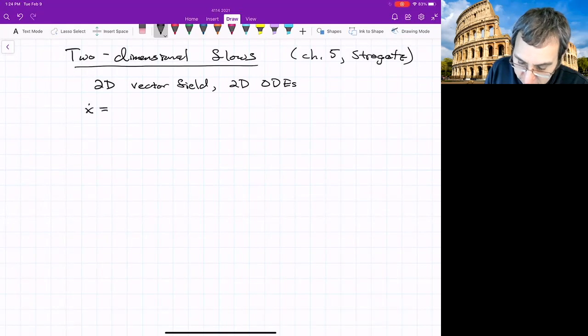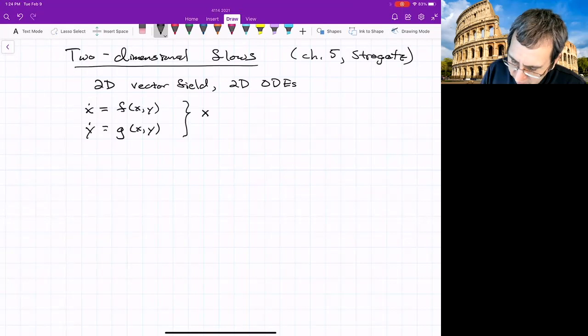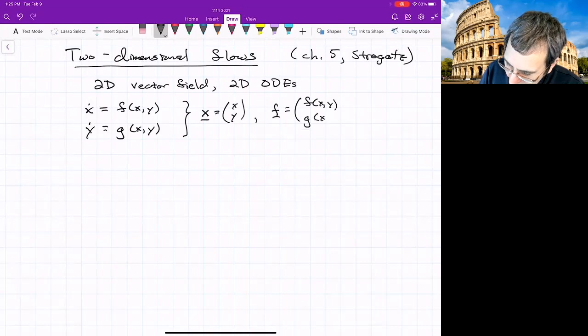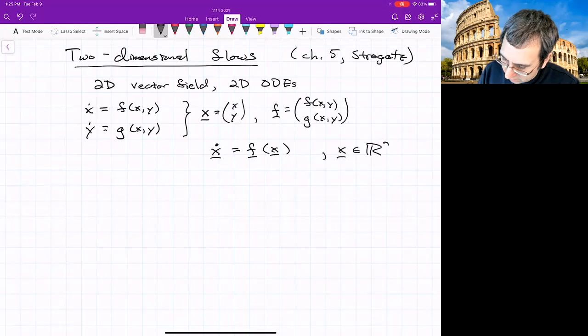We have an x variable and a y variable. They both evolve. They're both real. x dot is f of x and y, y dot is some other scalar function. If we combine these two into a vector, and for now I'll put x with an underscore to remind ourselves this is a vector, and then f would be a vector. Then this is the same as x dot equals f of x, where x is in R2.